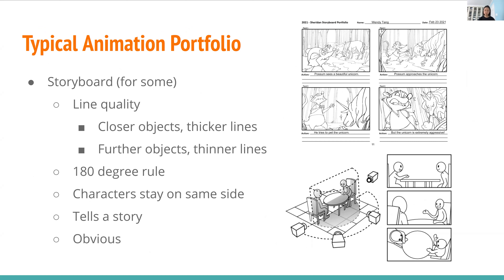For storyboard, line quality is important as well — closer objects have thicker lines, further objects have thinner lines. There's also a rule called the 180-degree rule: in your storyboard, you shouldn't go over 180 degrees, and your character should probably stay on the same side. It should tell a story and it should be pretty obvious to the viewer what it's saying. A good thing to do is create a rough sketch, then show it to someone without the text at the bottom and see if they can figure out what's going on — if they can very easily, your storyboard is pretty obvious, and that's a good thing.